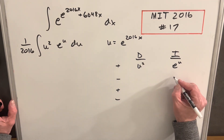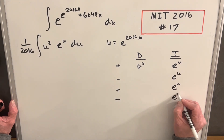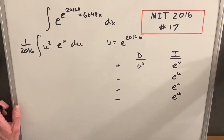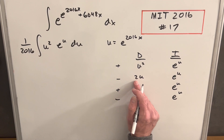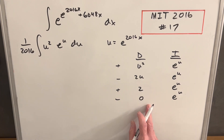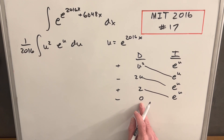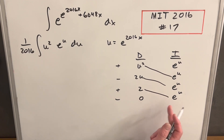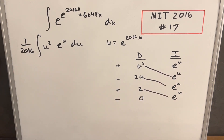On the right side, integrating e to the u is just e to the u, e to the u, e to the u — very easy. Differentiating u-squared we get 2u, differentiating 2u we get 2, differentiating 2 we get 0. Our answer is going to be the diagonals. The last row would be an integral, but we have a 0 here, so 0 times e to the u is 0 — we're not worried about that integral.